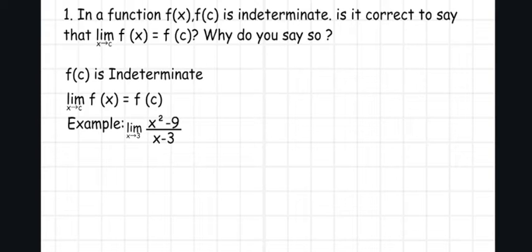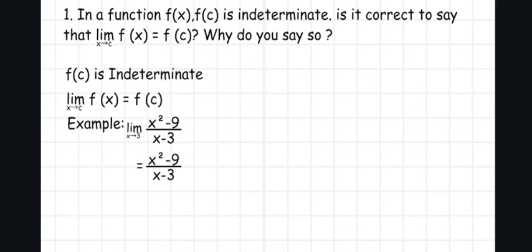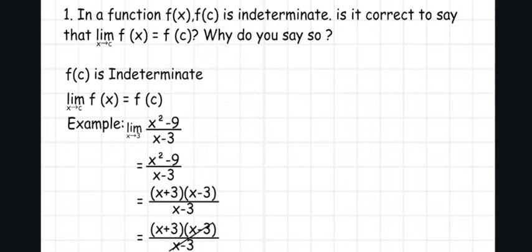The next example is the limit of (x² minus 9) over (x minus 3) as x approaches 3. When we substitute directly, the answer is 0 over 0, which is indeterminate. So what we do is expand the numerator, x² minus 9, and factor it as (x plus 3)(x minus 3) over (x minus 3). We can cancel the (x minus 3) terms, leaving x plus 3. Then we substitute 3, and the equation equals 6.